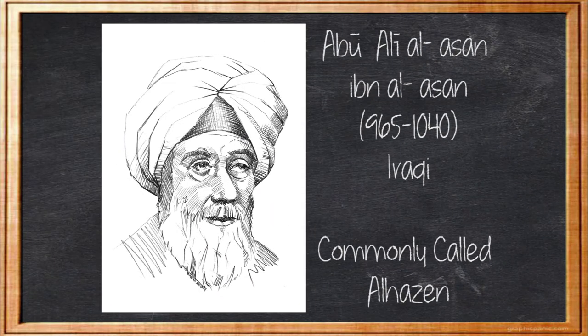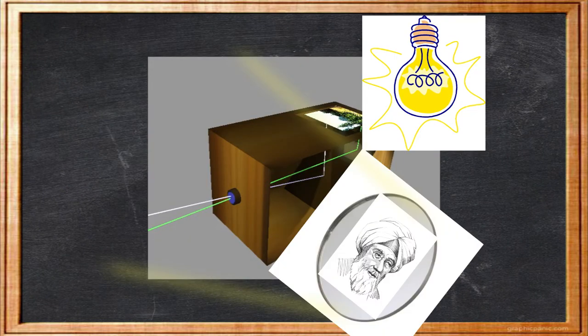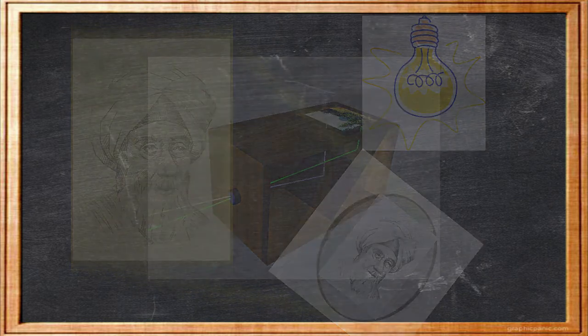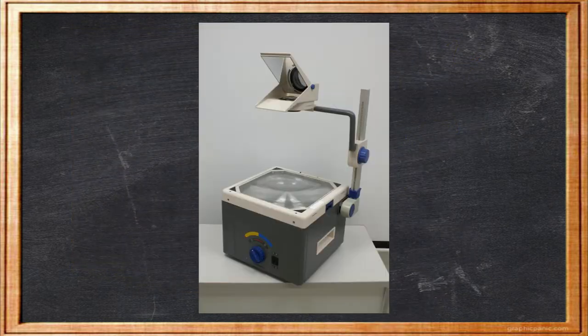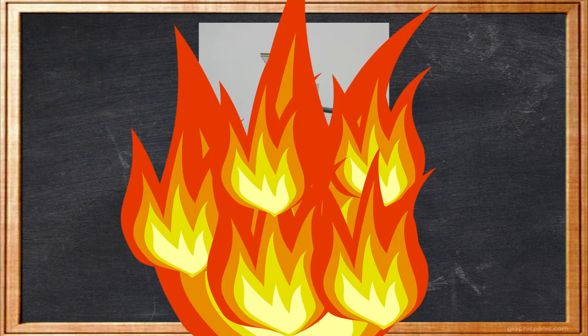In 1021, an Iraqi scientist named Alhazen built the Camera Obscura, an object that uses light and mirrors to project images onto walls and other surfaces. It's a lot like the overhead projectors your teachers used to use in school, only with less electricity and more fire.